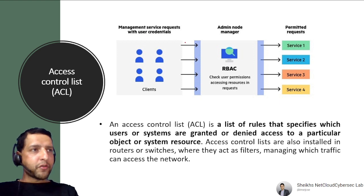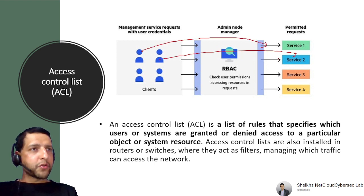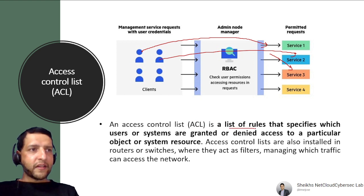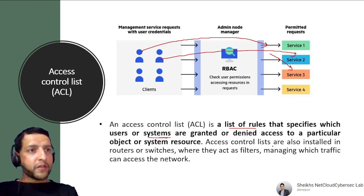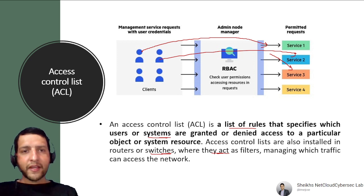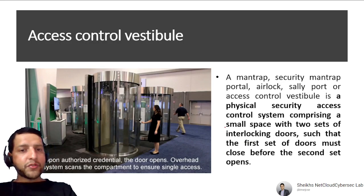Access Control List (ACL) is a selective restriction — a list of rules that specifies which users or systems are granted or denied access to a particular object or system resource. ACLs are also installed in routers or switches where they act as a filter, managing which traffic can access the network. Based on user roles, different users get different access levels.